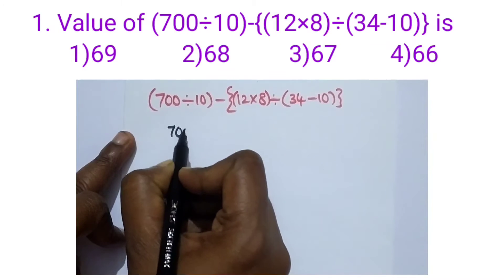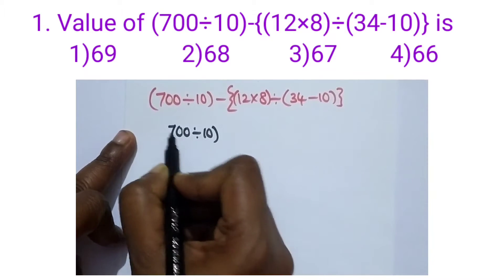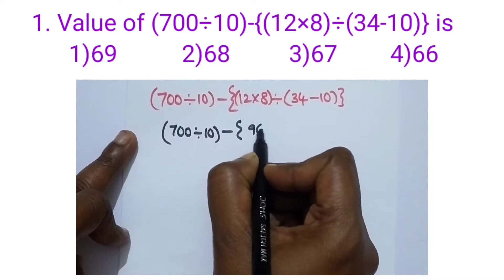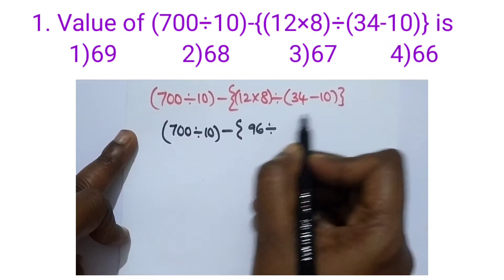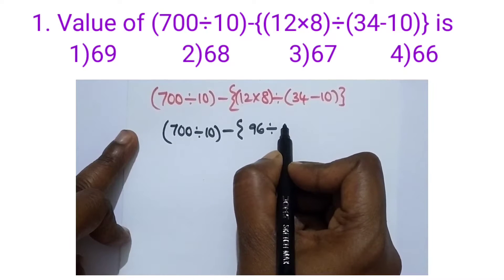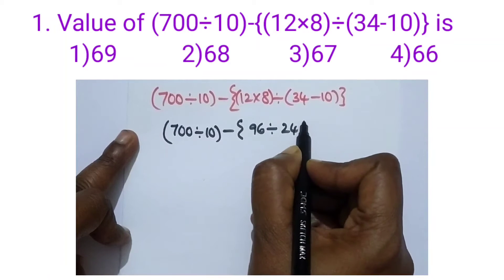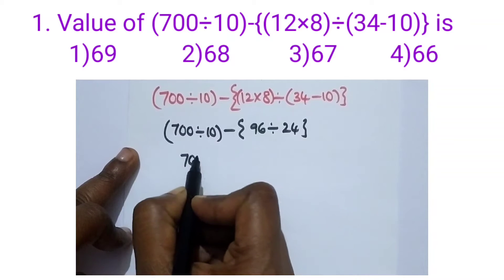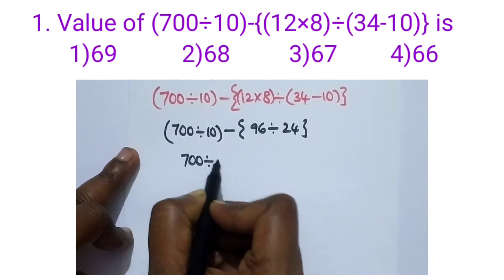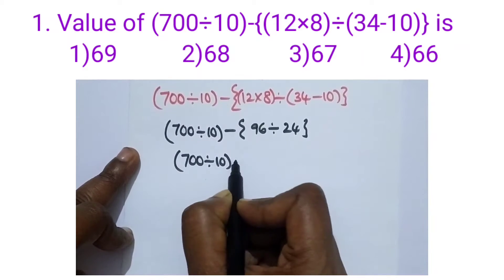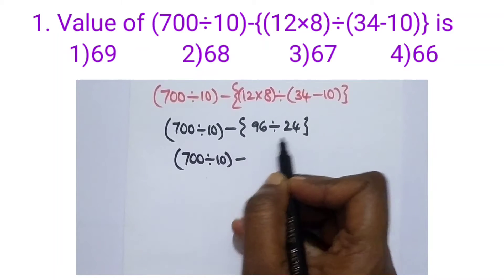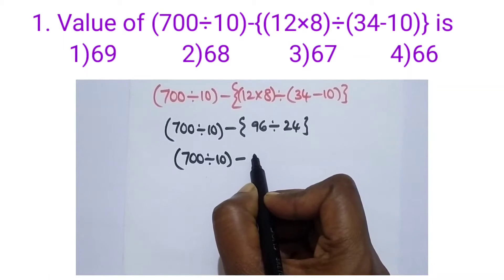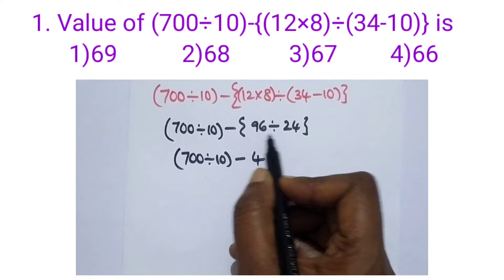First, solve the brackets: 34 minus 10 equals 24. So we have 700 divided by 10 minus 96 divided by 24. Now, 96 divided by 24 equals 4.